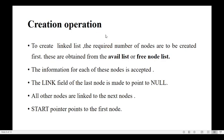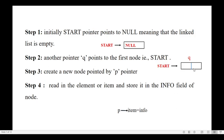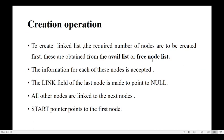To create a linked list, the required number of nodes must be created first. These nodes are obtained from the available list, also called the free node list. Whenever you create a node for a linked list, you need a data part and a link part. We need memory to store both the data and the link. The available list or free node list is where the free space of the computer's memory is available. Take a free node from this list and assign a data and a link part to it.